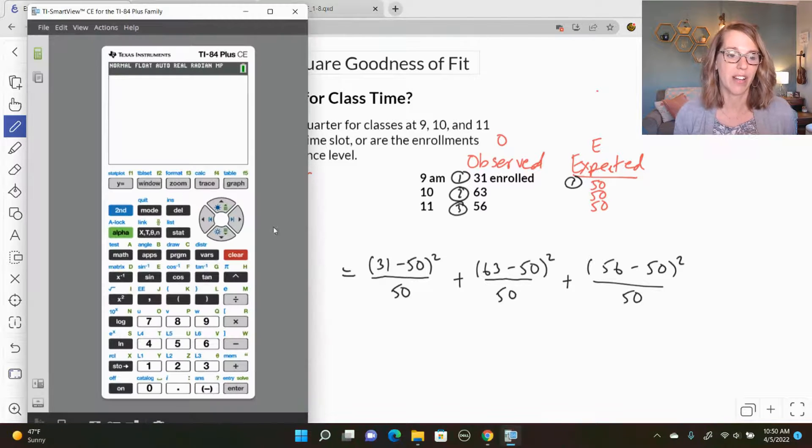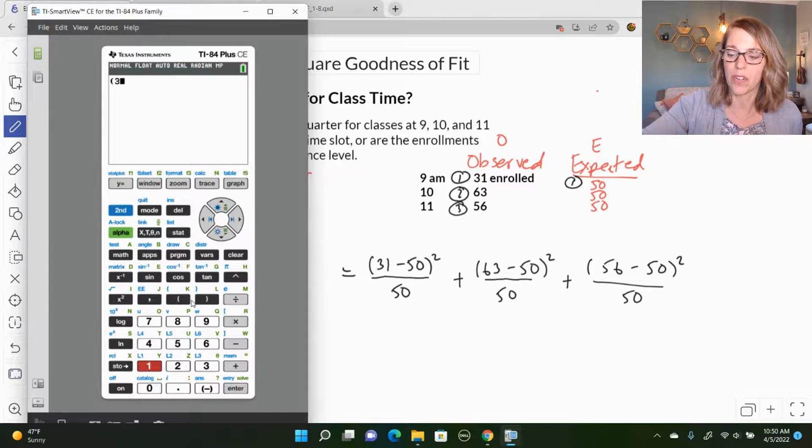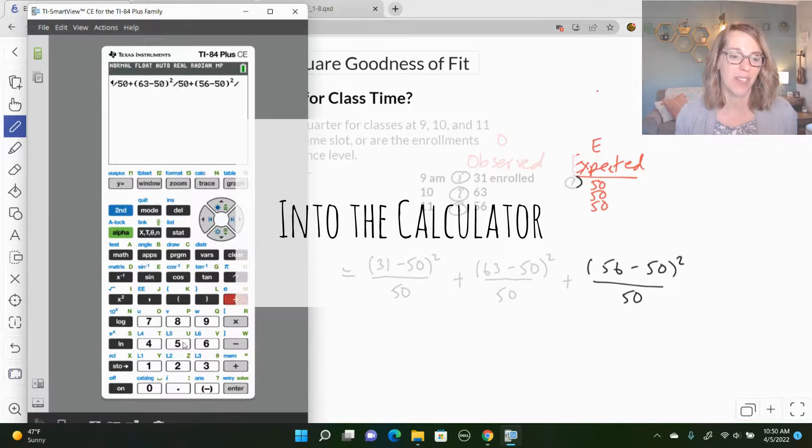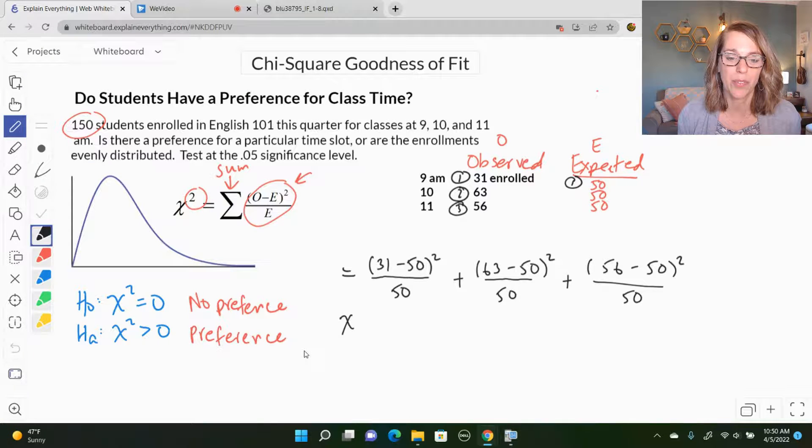I'm going to grab my calculator and very carefully put this into my calculator. So I want 31 minus... I can enter, hopefully I entered those in right, and I get a chi-square. This is my test value of 11.32. So my chi-square test value is about 11.32.